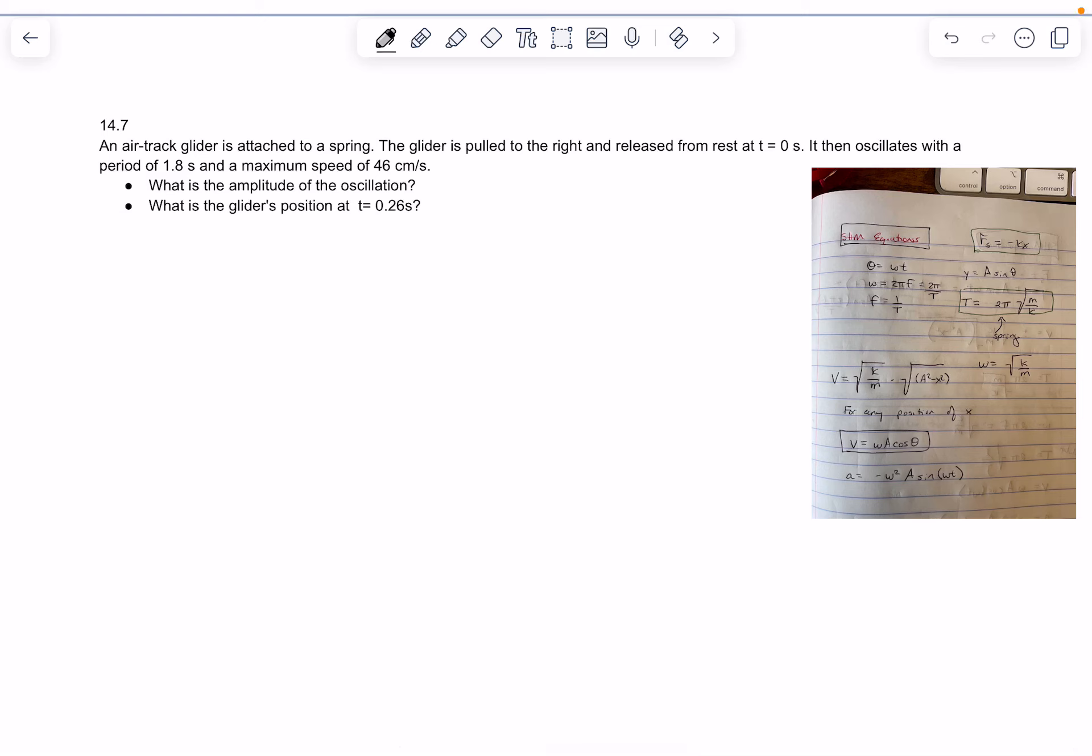So, this question, we've got a glider on a track, and he's oscillating between... what it doesn't say, what we know is he oscillates with a period of 1.8 seconds.